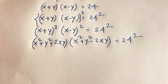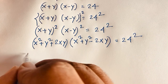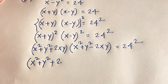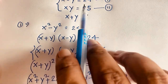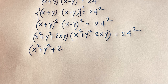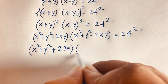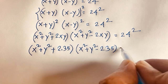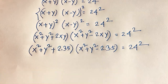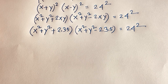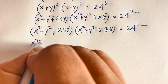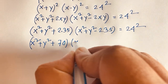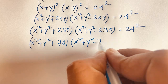Now this expression becomes (x squared plus y squared plus 2xy) times (x squared plus y squared minus 2xy) equal to 24 squared. Remember our second equation: xy equals 35, so I substitute this value. It becomes (x squared plus y squared plus 70) times (x squared plus y squared minus 70) equal to 24 squared.